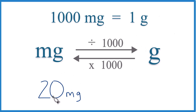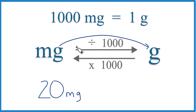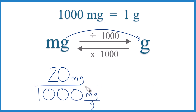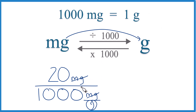Here we have 20 milligrams. We want to convert that to grams, so milligrams to grams. We're going to divide by 1,000. So really, all we're doing is dividing 20 by 1,000. But if we keep the units, we can see that we have milligrams on the top and the bottom, because of 1,000 milligrams per gram — that's our conversion factor. Now we're left with grams, so we know we did it correctly.